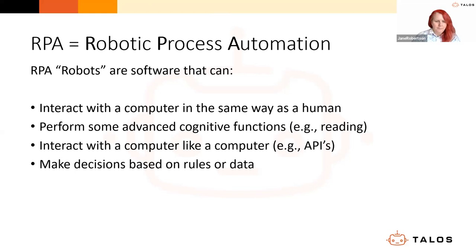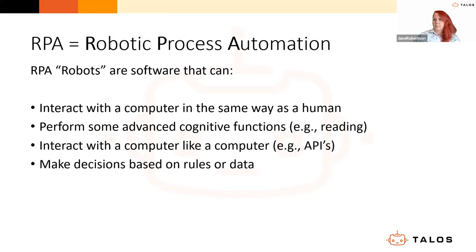So, an overview of what Robotic Process Automation is. RPA is the shorthand term, and effectively robots are software that can support a business process. One of the most remarkable capabilities is that RPA can interact with computers exactly the same way that humans can — mimicking human interactions such as mouse clicks, keyboard inputs, and navigating through applications and systems. An RPA robot can work seamlessly within existing interfaces without complicated integrations or changes to underlying systems.